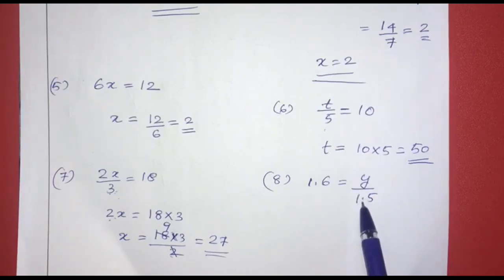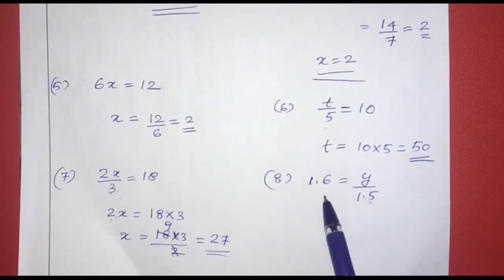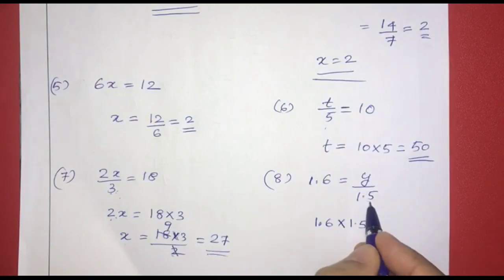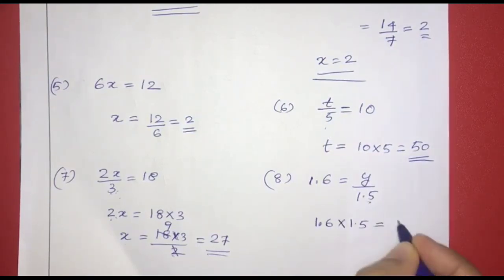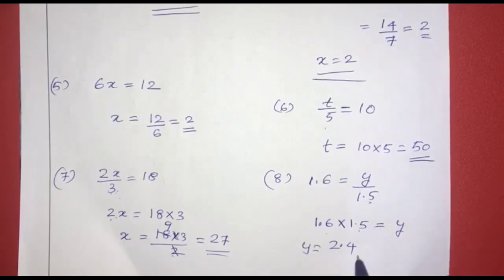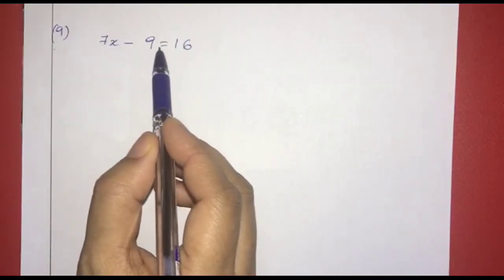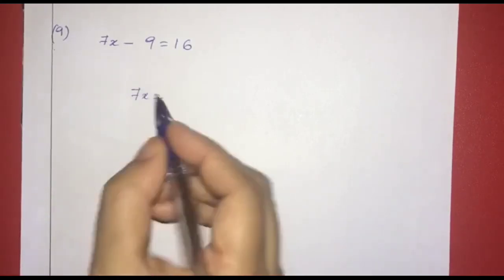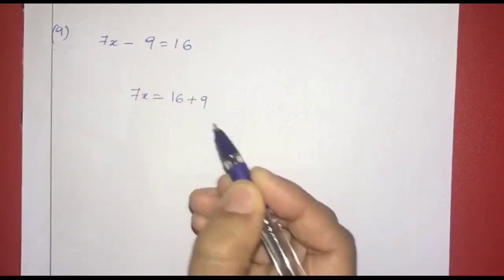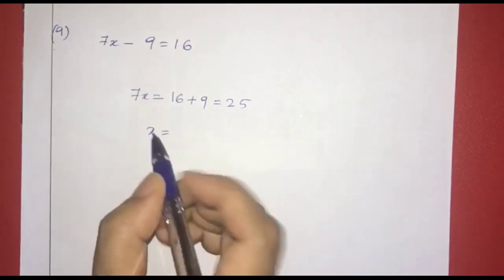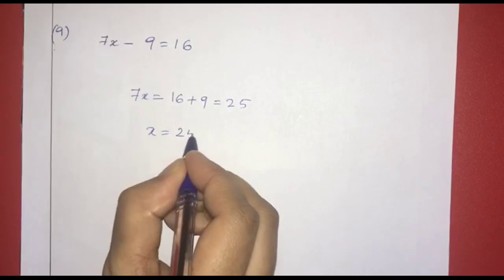Next: 1.6 equals y by 1.5. Multiplying both sides by 1.5, y equals 1.6 into 1.5 equals 2.4. Next: 7x minus 9 equals 16. So 7x equals 16 plus 9 equals 25. Therefore x equals 25 divided by 7.